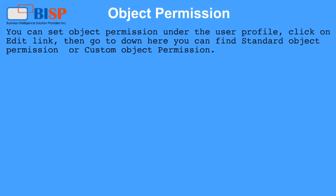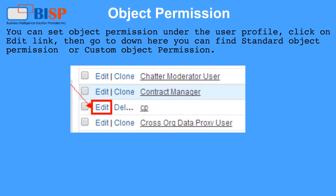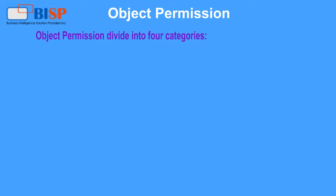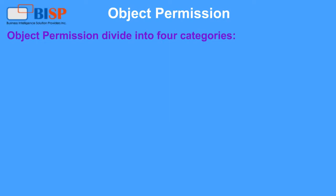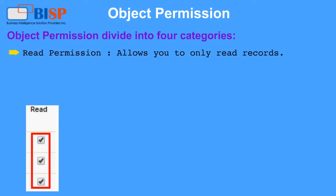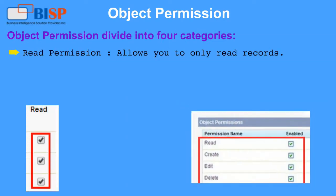Object permissions can be set under the user profile. Click on the Edit link, then scroll down to find standard object permissions or custom object permissions. Object permissions are divided into 4 categories. Read permission allows you to only read records.